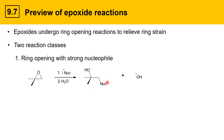Notice here that the nucleophile becomes attached to the epoxide carbon at the less substituted of the two carbons — that's one of the characteristics we'll look at when we study epoxide reactions. Strong nucleophiles attack the less substituted carbon.